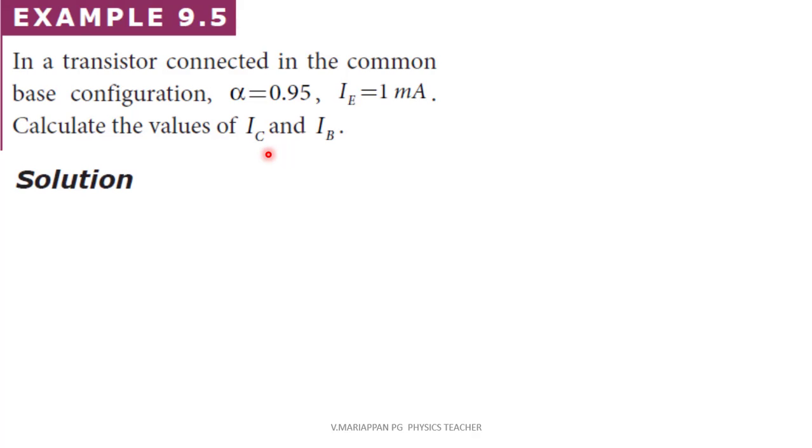First, to solve the problem, alpha is equal to IC divided by IE. So from the formula, IC is equal to alpha times IE.